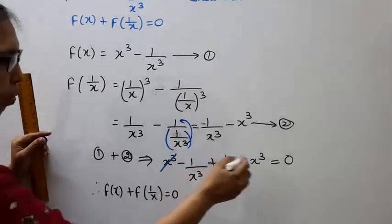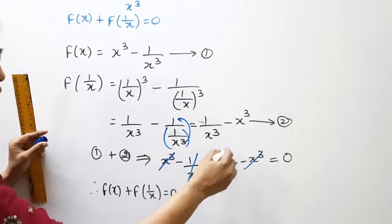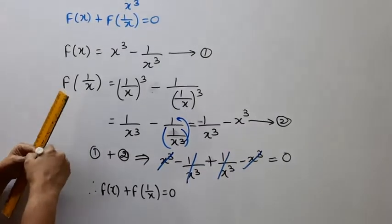Plus x cubed minus x cubed cancel. Minus 1 by x cubed plus 1 by x cubed cancel.